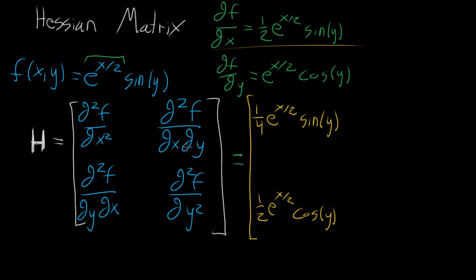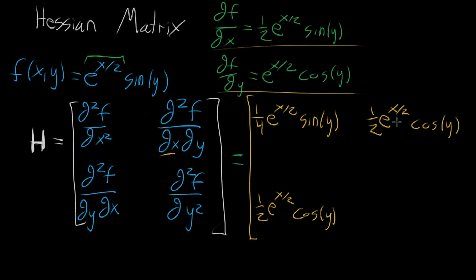The other mixed partial — first with respect to y, then x — takes the fy term, brings down the half, giving one half e to the x halves times cosine of y. It shouldn't be a surprise that both mixed partials turn out to be the same; for most functions that's the case. Technically not all functions — you can construct cases where the matrix won't be symmetric — but for the most part you can expect those to match. Finally, differentiating with respect to y twice: e to the x halves is a constant, and the derivative of cosine is negative sine, giving negative e to the x halves times sine of y.